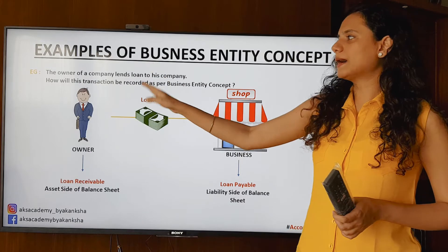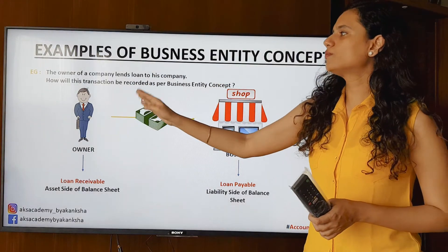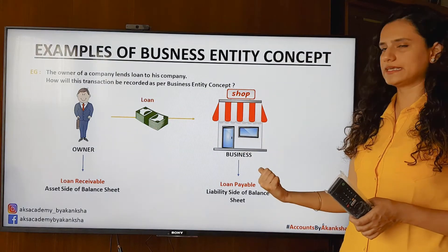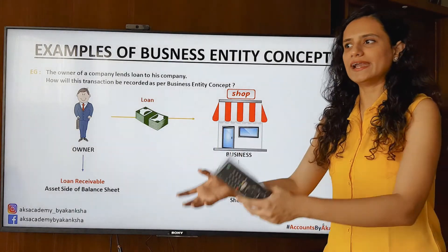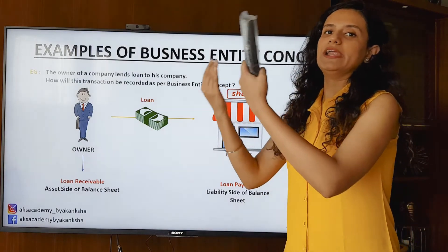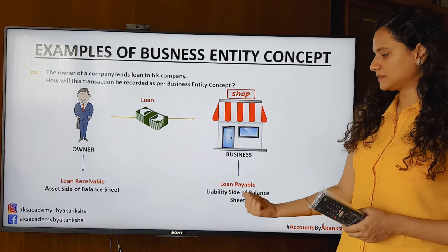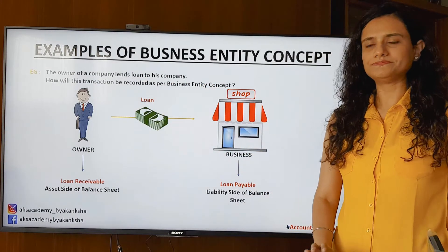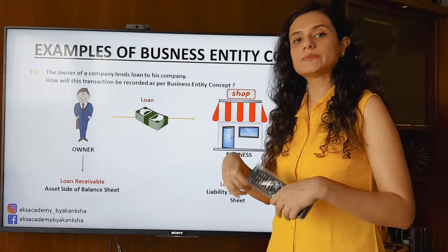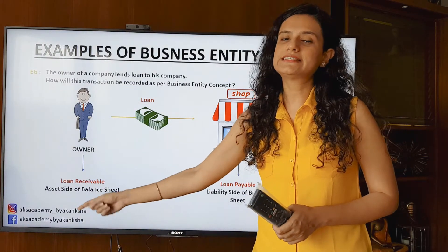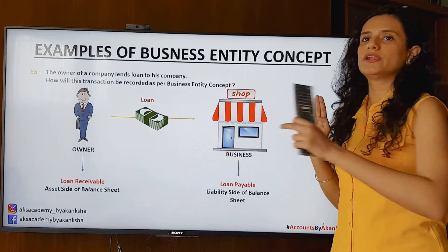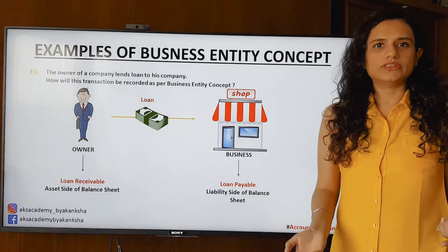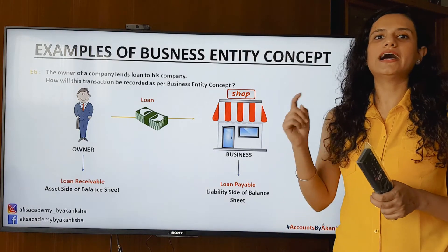Next example: the owner of a company lends a loan to his company — how will this transaction be recorded as per the business entity concept? The owner has put some money into the business. For the business, this amount received from the owner needs to be paid back, so in the business's books of accounts this will show as a loan payable — a liability on the balance sheet. Then in the owner's books of accounts, we will show it as a loan given to the business — loan receivable on the asset side of the owner's balance sheet. Two separate legal entities, so both will be shown differently. We cannot say the owner and business are the same and question why give yourself a loan. This will be considered a proper loan.